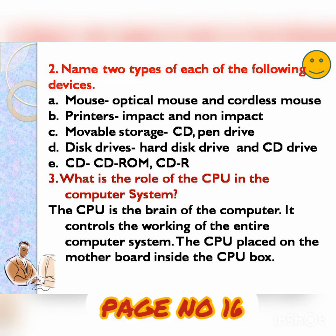Next: name 2 types of each of the following devices — mouse, printers, movable storage, disk drives, and CD.